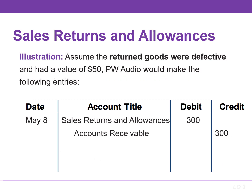In the previous example, we assumed that the goods were not defective. If they were defective, PW Audio would make an entry to the inventory account to reflect the decline in value. If the inventory had a value of $50, then we would increase or debit inventory for $50, and we would decrease or credit cost of goods sold for the same amount.